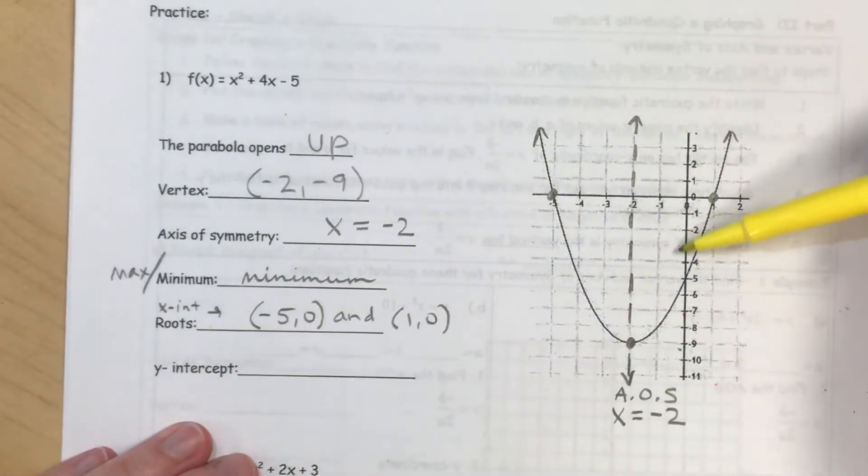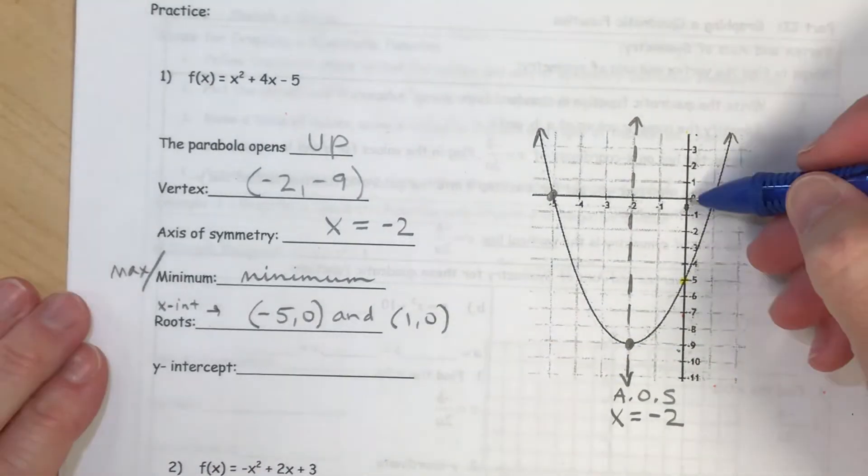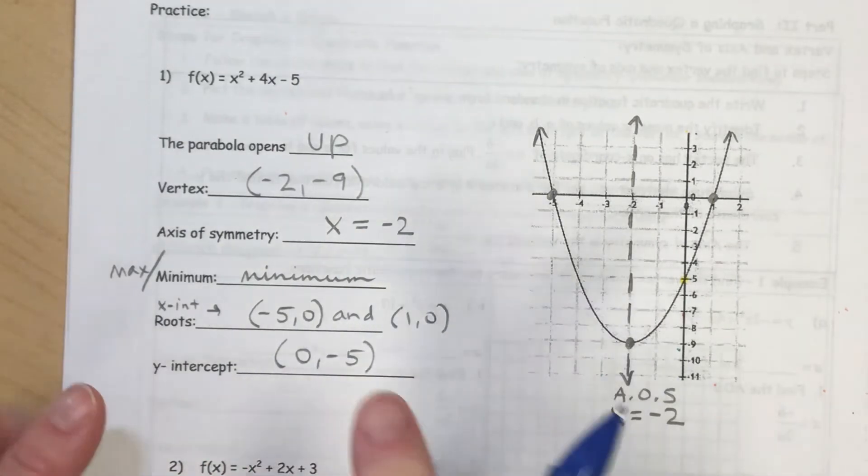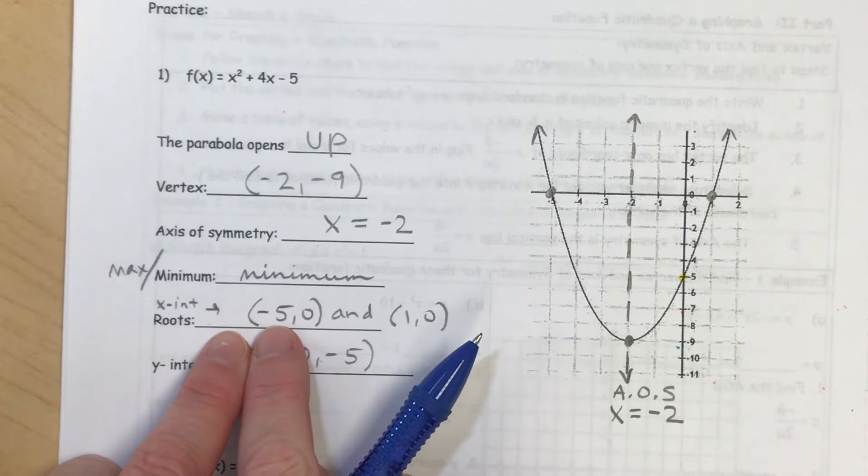And then the y-intercept, where it crosses my y-axis, so here's my y-axis, it crosses at 5. And it's down at 5, so that means 0, negative 5. So again, y-intercept should have the point in the y value, x-intercept should have a point in the x value.